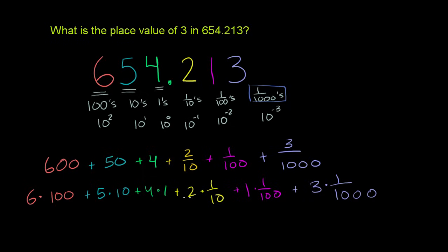So hopefully this, when you write it out like this, gives you a sense of what it means when we say place value. The 6, three digits to the left of the decimal is in the hundreds place, so it represents 6 hundreds. This represents 5 tens, because it's in the tens place. This represents 4 ones. You go to the thousandths place, this 3 literally represents 3 one thousandths.